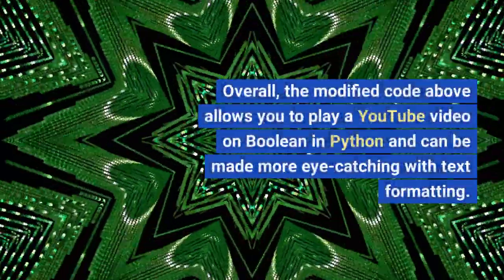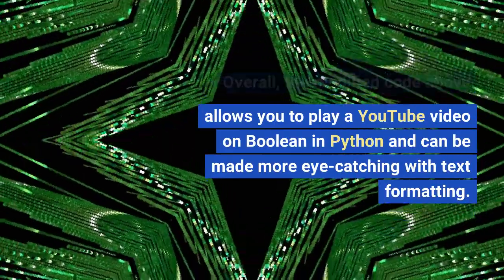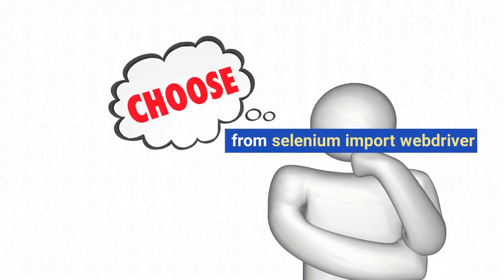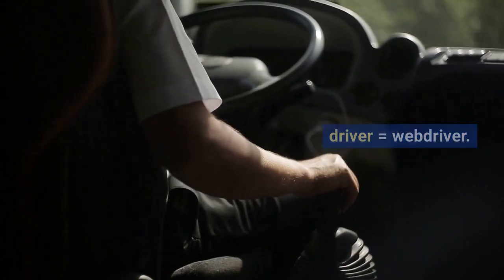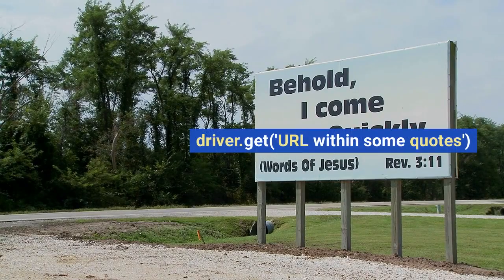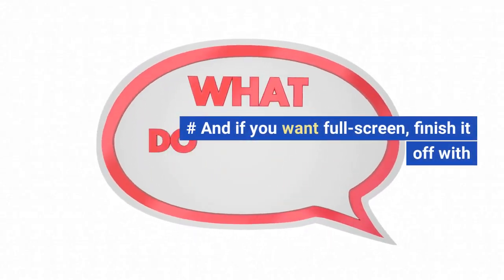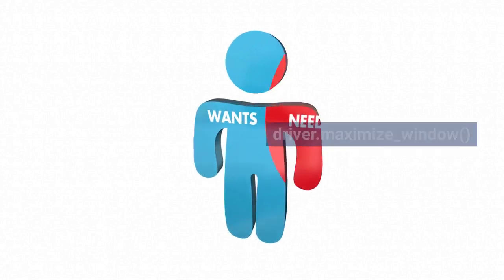Overall, the modified code above allows you to play a YouTube video on Boolean in Python and can be made more eye-catching with text formatting. Other options: from Selenium import WebDriver — you could also use Chrome or Firefox. Driver equals WebDriver.Firefox. Driver.get with the URL in quotes. And if you want full screen, finish it off with driver.maximize_window.